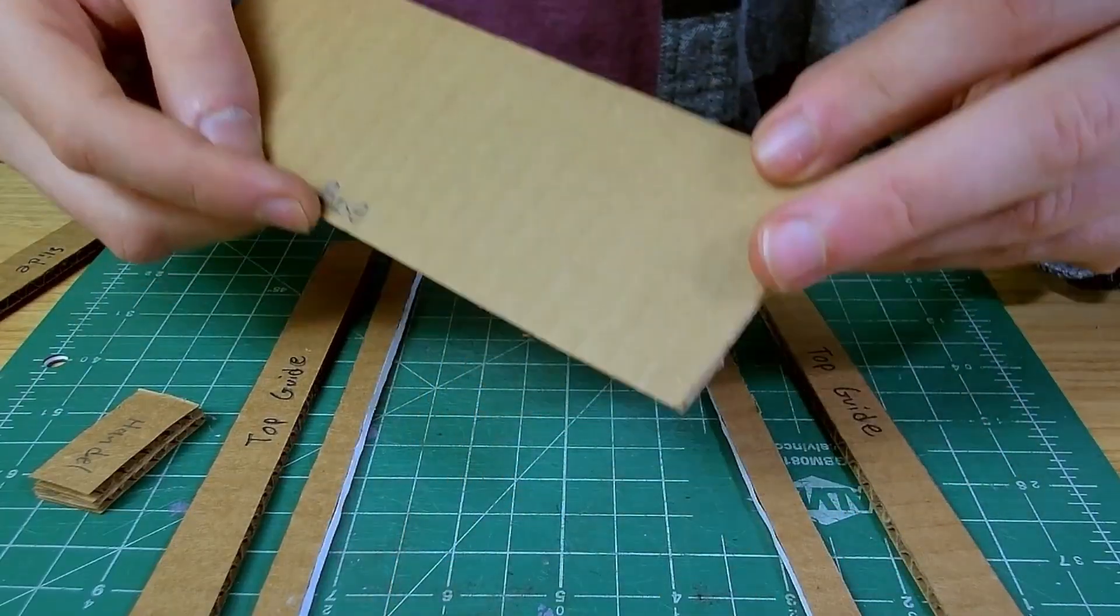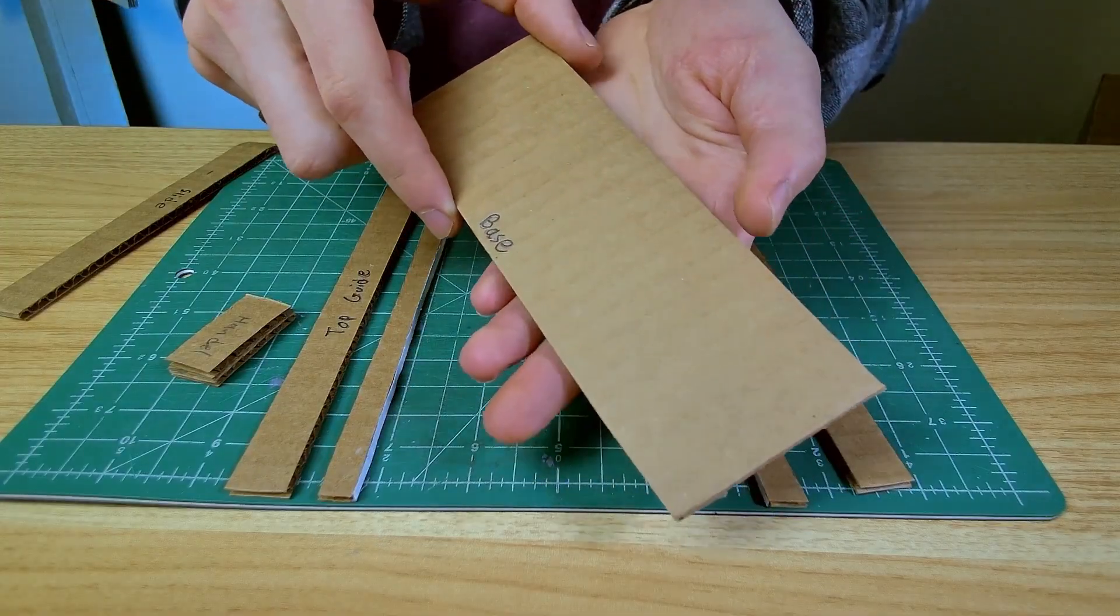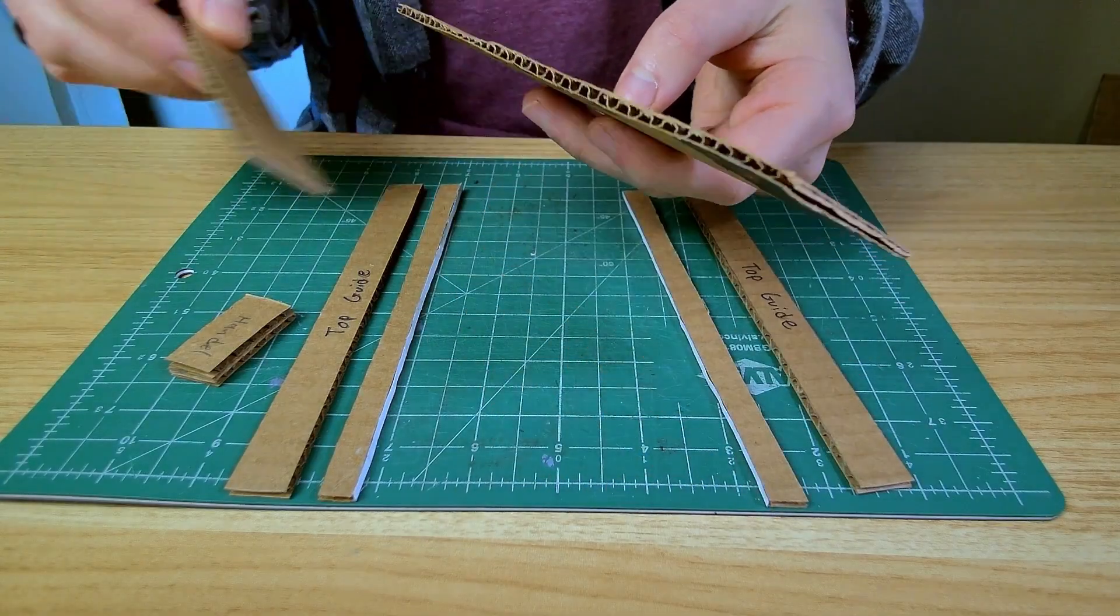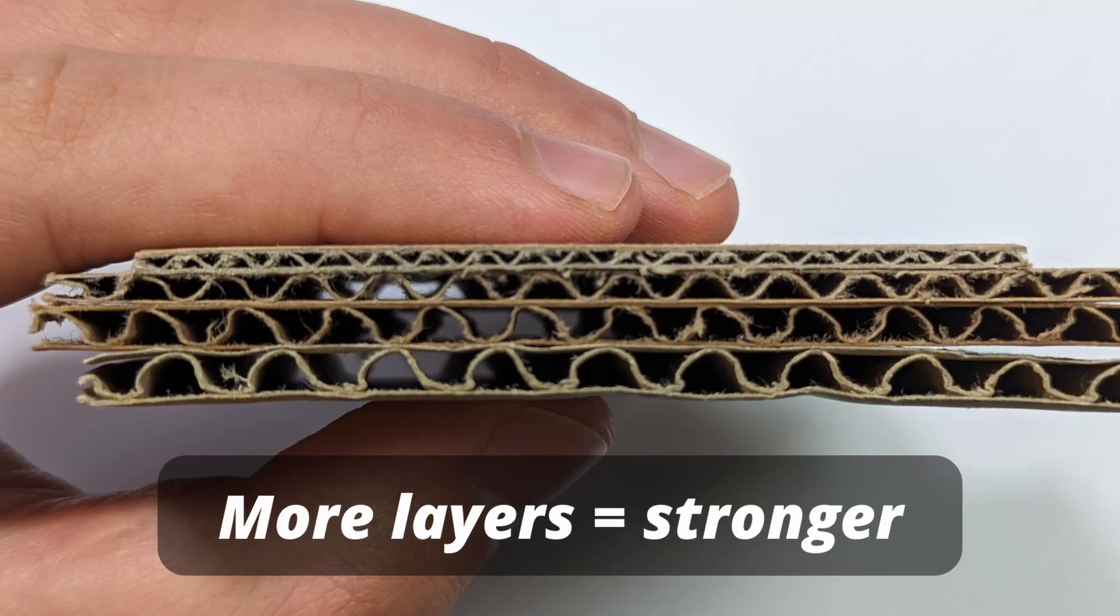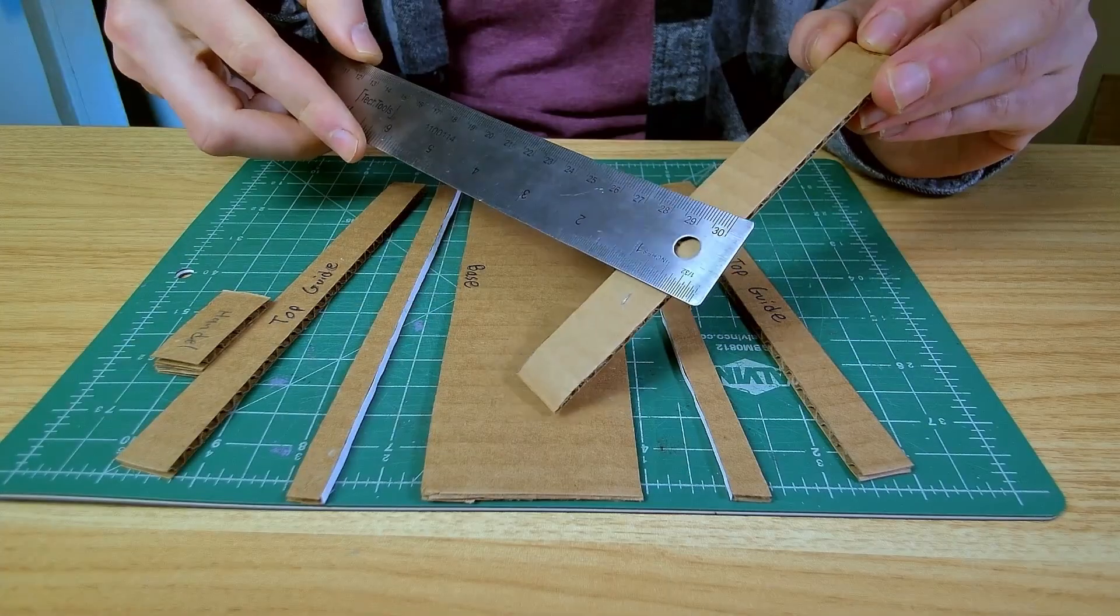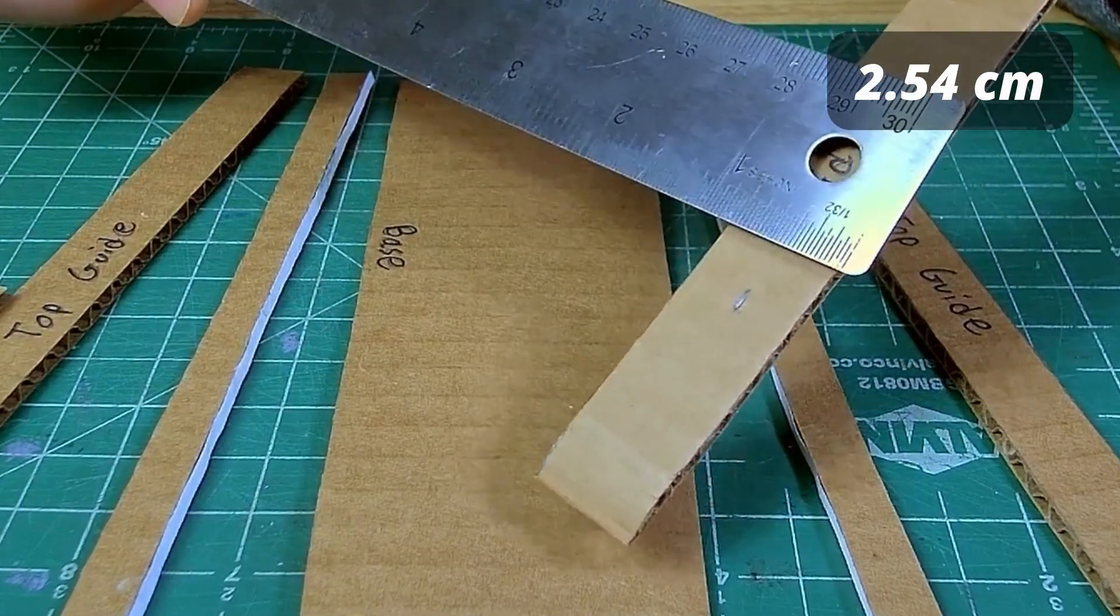If you end up going really wide, perhaps your slider is the same size as this base right here, you might actually want to make it a little bit more durable by adding another layer of cardboard and making it two layers thick. But if you're about an inch wide, I've found that that is pretty easy to work with.